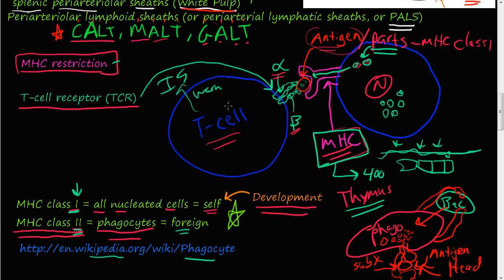That is how T cells work in the immune system — how the immune system can recognize self and recognize foreign invaders under the adaptive immune system. T cells recognize yourself through MHC complexes and recognize what's foreign. That covers the recognition part of T cells. In the next video, we'll talk about what responses T cells elicit.